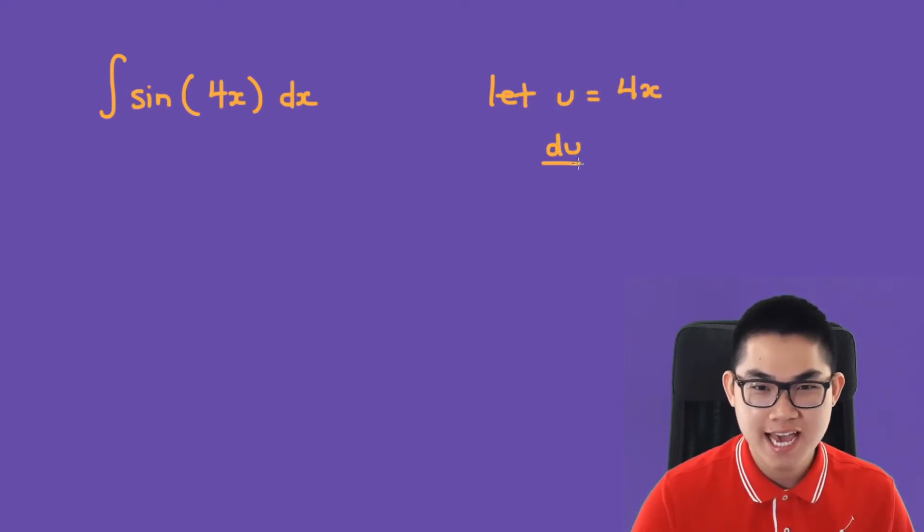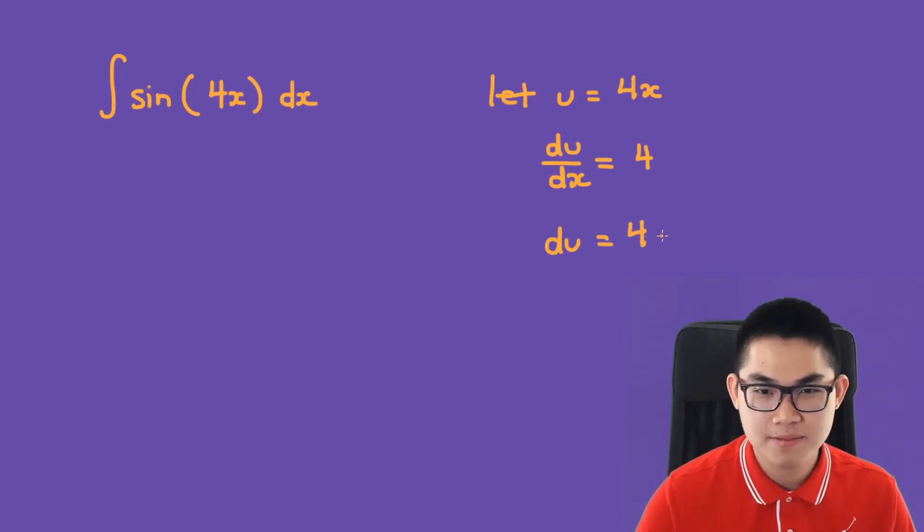Du over dx. What is the derivative of 4x? It is going to be 4. So du is equal to 4 times dx.